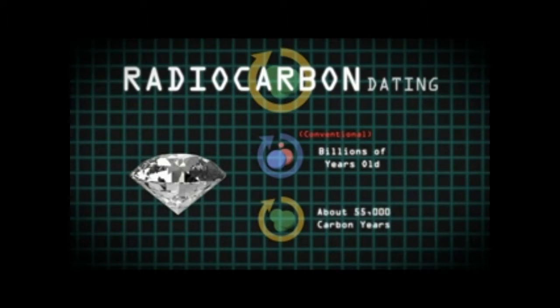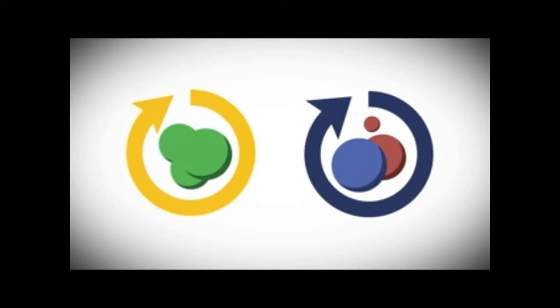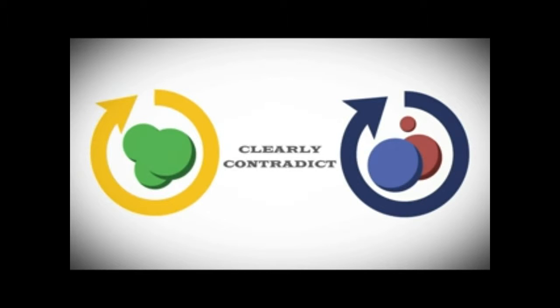And supposedly millions of years old dinosaur bones and other fossils show dates in the tens of thousands of carbon years. Radioisotope and radiocarbon ages can clearly contradict one another.